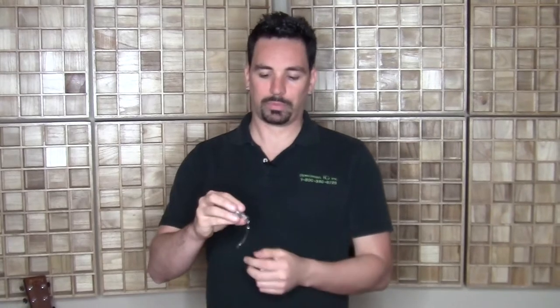This is the 2120 7621 badge reel retractable. It's got a 34 inch cord length. You can easily retract your ID badge and have it pop right back into place.